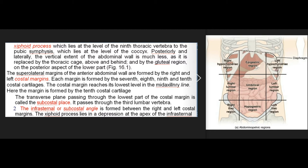The superolateral margins of the anterior abdominal wall are formed by the right and left costal margins. Each margin is formed by the 7th, 8th, 9th, and 10th costal cartilages. The costal margin reaches its lowest level in the midaxillary line, where the margin is formed by the 10th costal cartilage. The transverse plane passing through the lowest part of the costal margin is called the subcostal plane. It passes through the third lumbar vertebra.